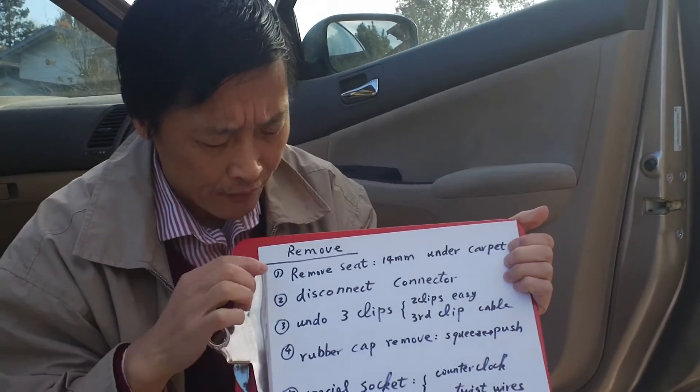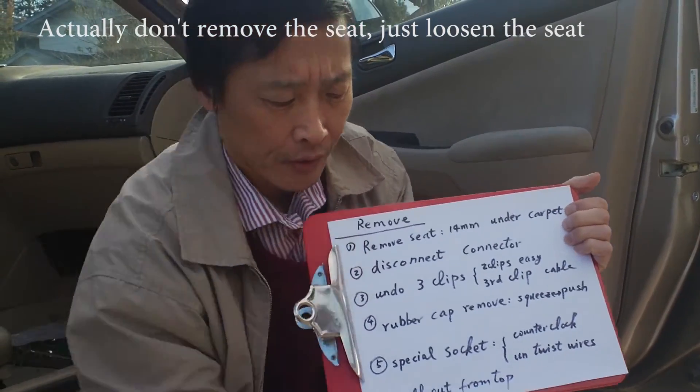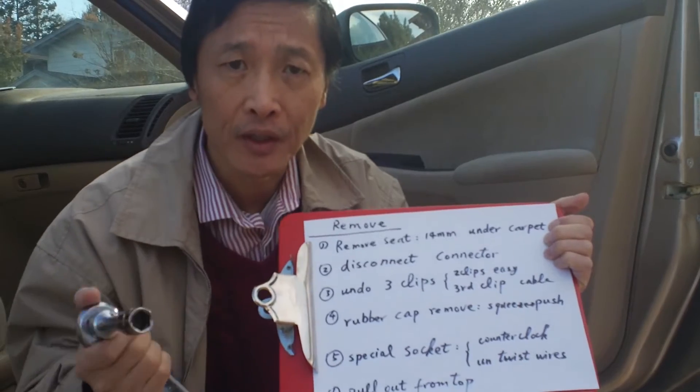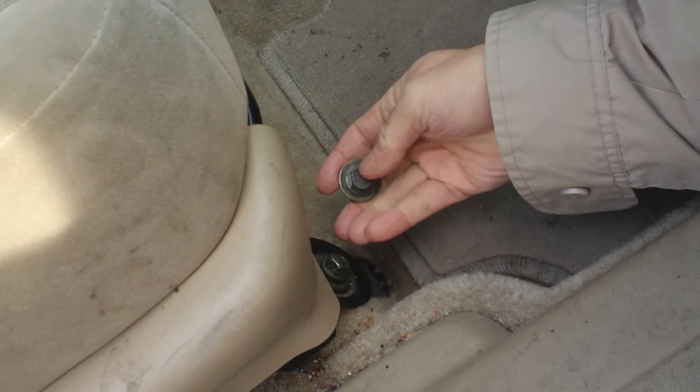There are six steps to remove the oxygen sensor. The first step is to remove the seat because the wire is under the seat. There are four 40 millimeter screws. You remove it from here. You remove the front seat.